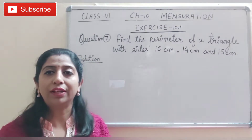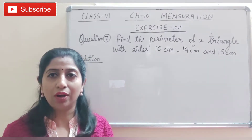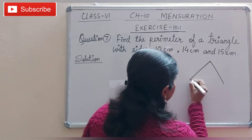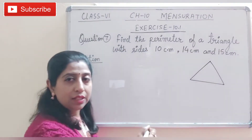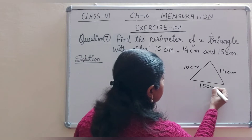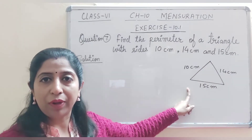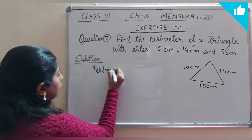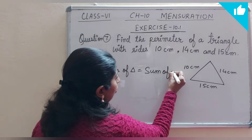It means that we have to find the perimeter of a triangle whose all sides have different measurements. So let us draw a rough diagram of the triangle. Let us suppose this is the required triangle and write down the measurement of the sides: 10 cm, 14 cm, 15 cm. Since the measurement of all the sides are different, we have to find the perimeter by finding the sum of all sides. Perimeter of triangle is equal to sum of all sides.